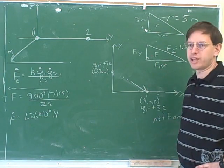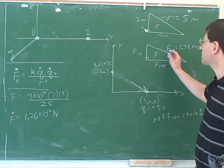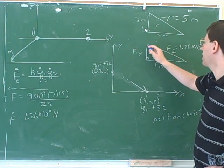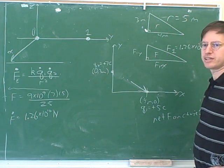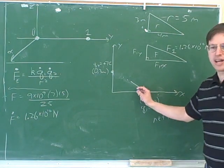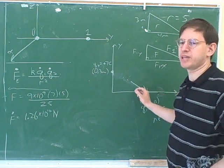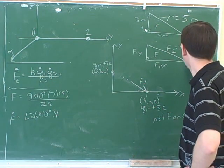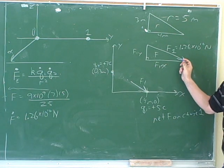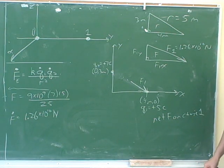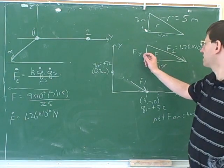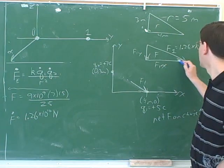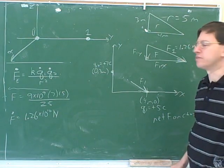Our job is to figure out these two legs. Forces are vectors, so we have to put arrows on them. Should the arrows on this force be pointing up and to the left, or down and to the right? Down and to the right — that's what we figured out with this arrow. These forces are being repelled from each other since we're focusing on force on charge one, so it's pointing down and to the right. That means we can put arrows on the legs as well: the vertical leg points down, and the horizontal leg points to the right.